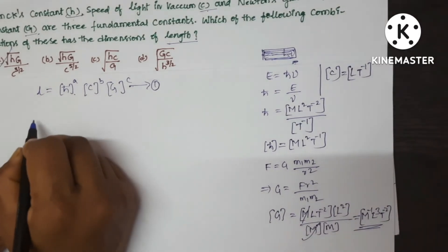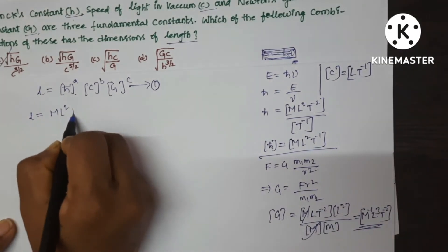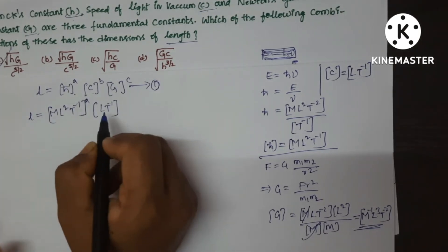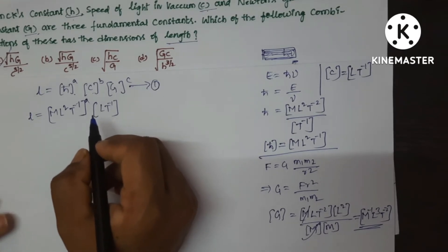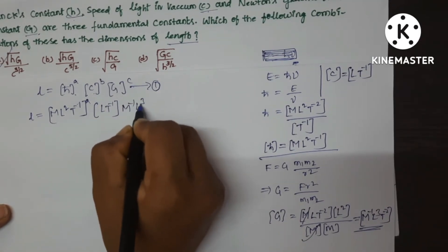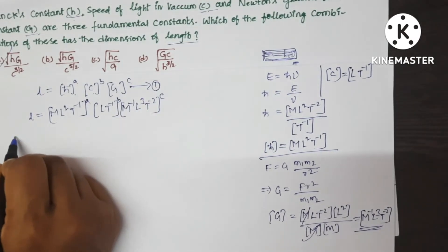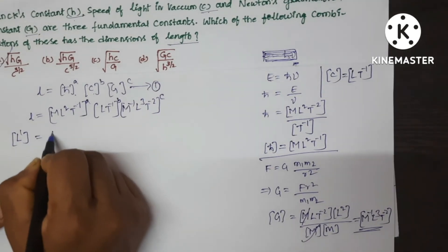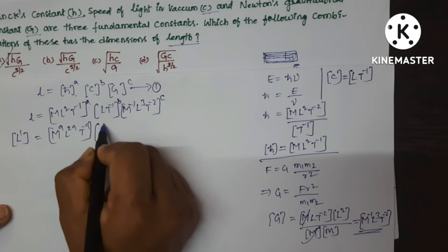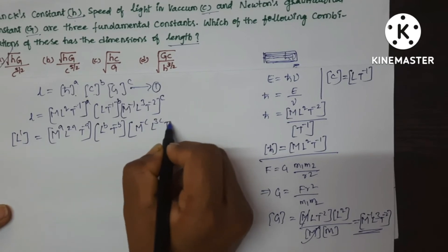Substituting all three values: L¹ = (M L² T⁻¹)^A · (L T⁻¹)^B · (M⁻¹ L³ T⁻²)^C. Expanding: M^A · L^(2A) · T^(−A) · L^B · T^(−B) · M^(−C) · L^(3C) · T^(−2C).